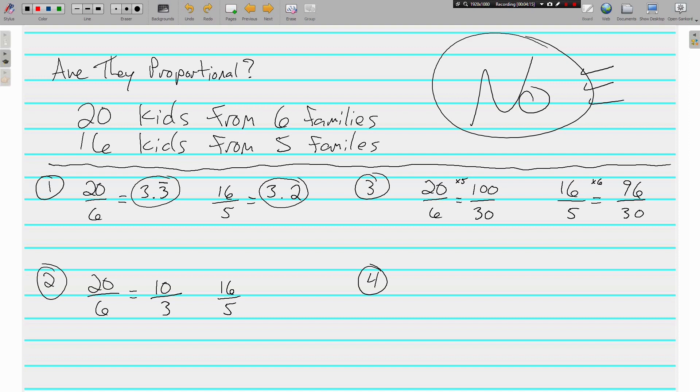The last way, using the cross products. This might be my favorite way. 20/6 and 16/5. Again, we want to know if these are equivalent. Well, you can check the cross products. If you multiply diagonally and up, 6 times 16 is 96. 5 times 20 is 100. This is kind of like getting a common denominator and making equivalent fractions. If you notice method number 3, we've got the 100 and the 96, just like we do here. But bottom line, are 100 and 96 the same? No, they're not.